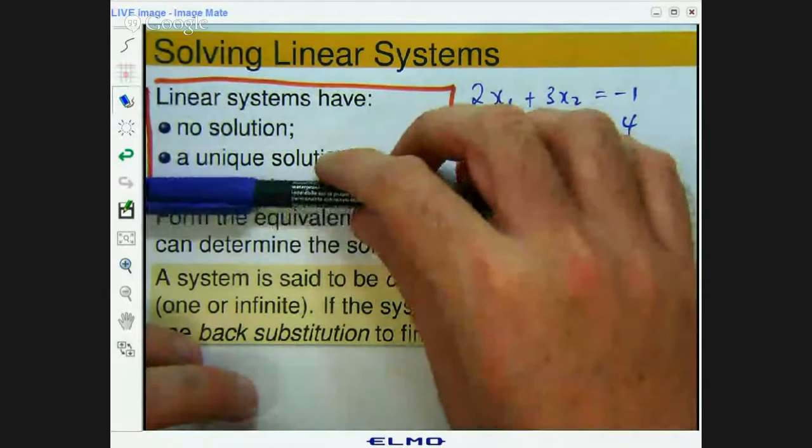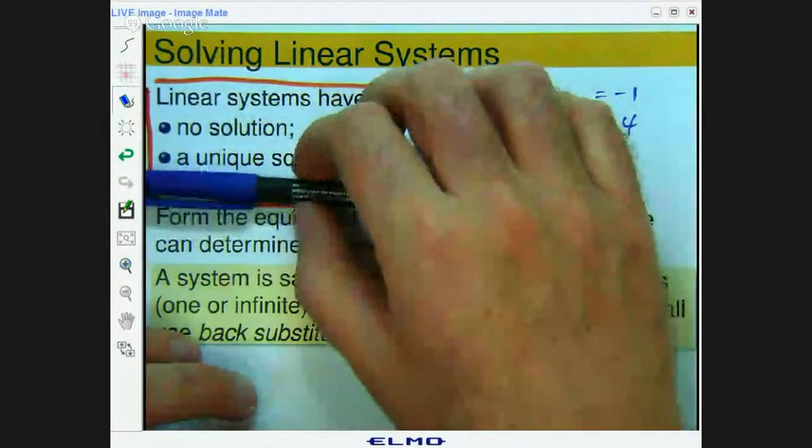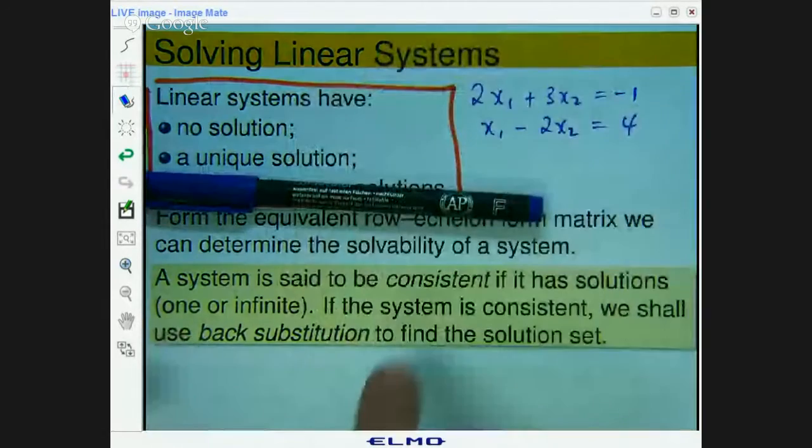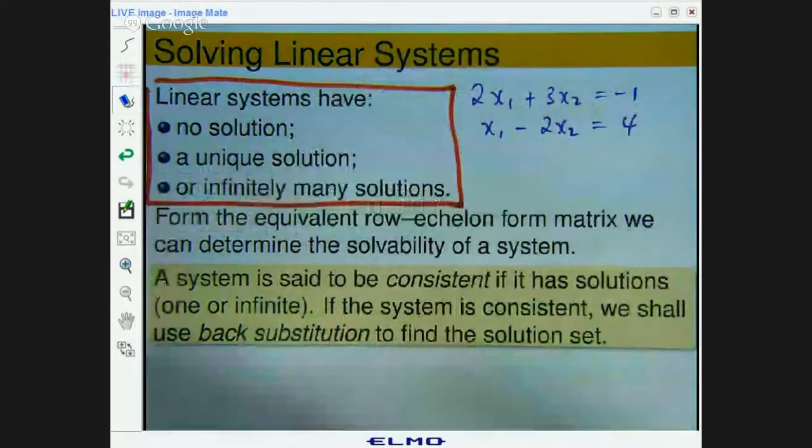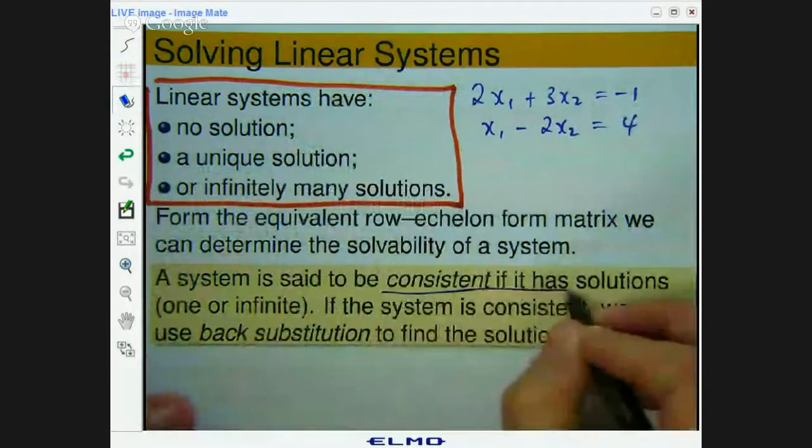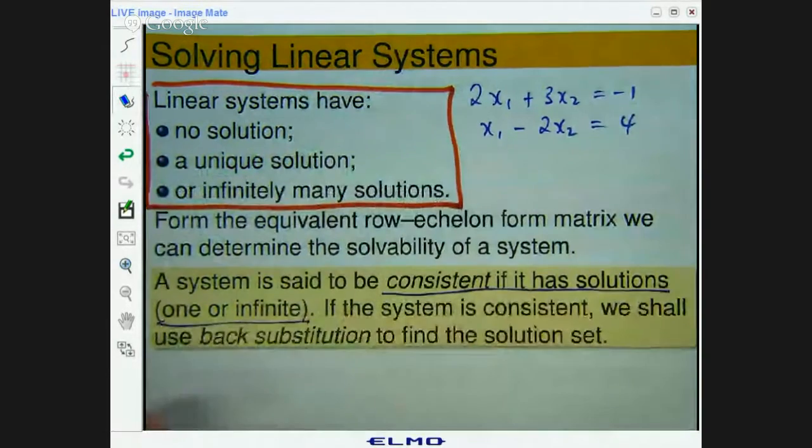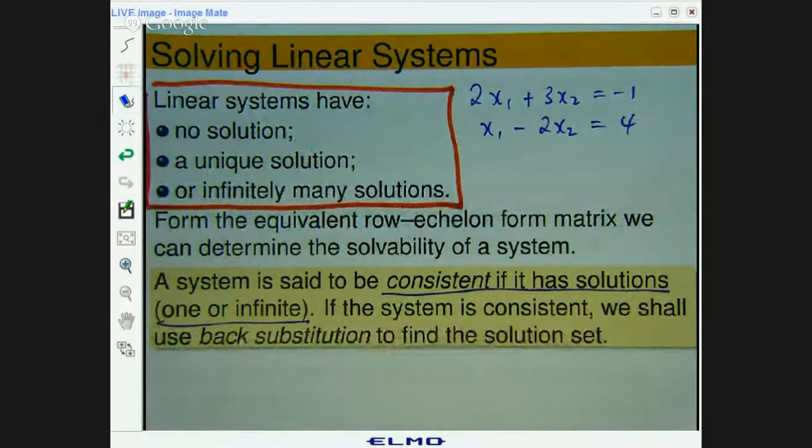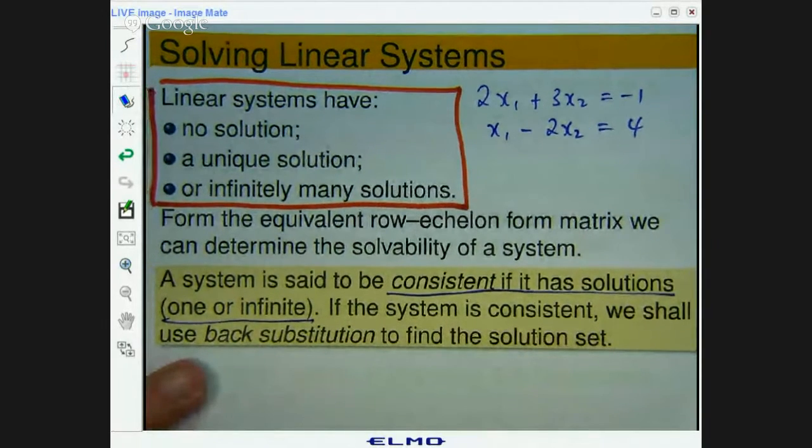Now, in the first two cases where there is a solution or at least one solution, we call the system consistent. So if there's one or infinitely many solutions, we talk about the solution being consistent.